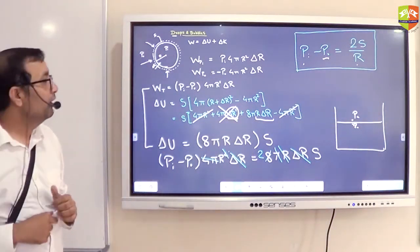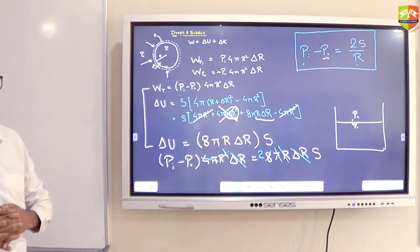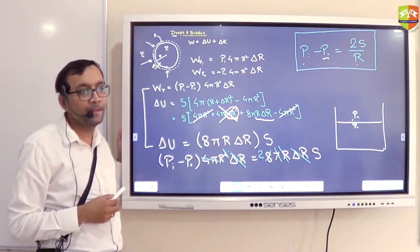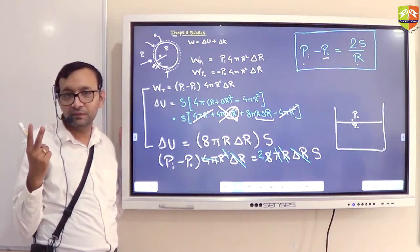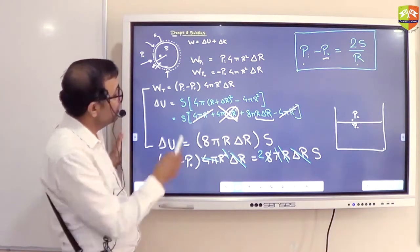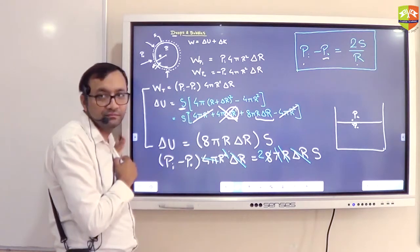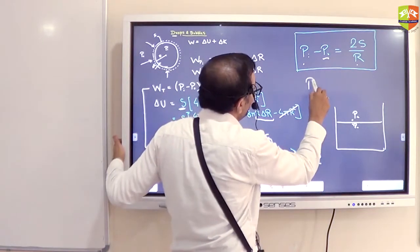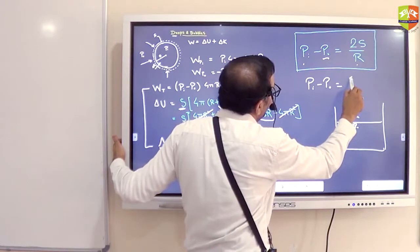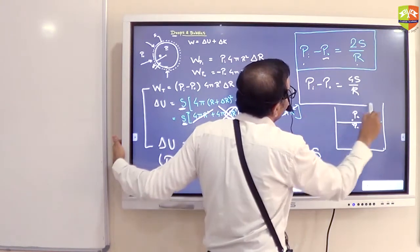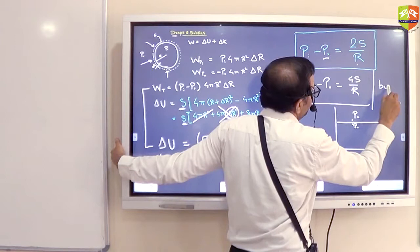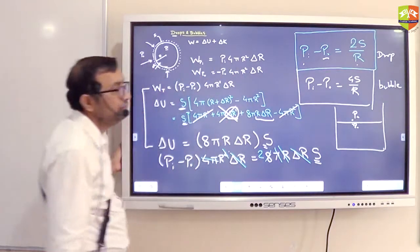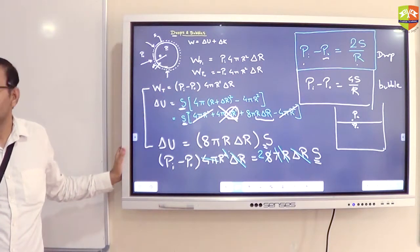This is for the drop. What you think for the bubble, how will you do it? If you follow the same process what is the only difference? There are two surfaces. Two surfaces are there so the S will be multiplied by 2. This will be 2S. So for bubble PI minus P₀ will be 4S by R. This is for the bubble, this is for the drop.